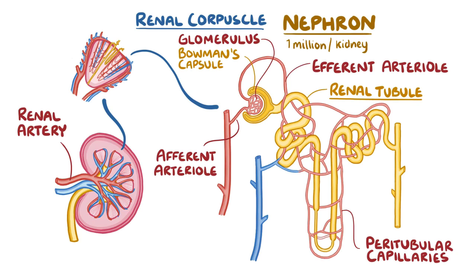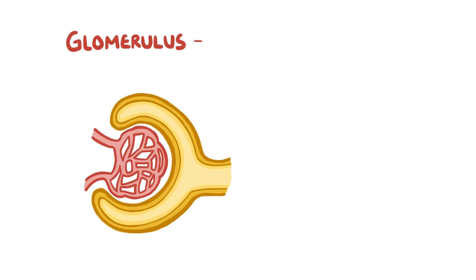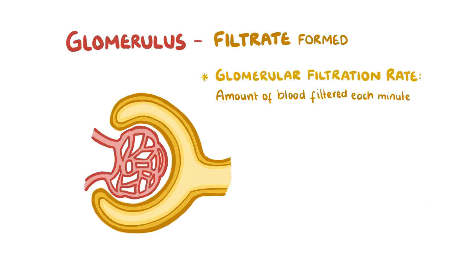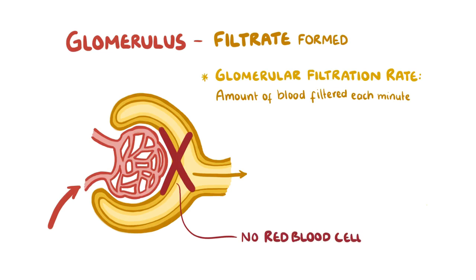Blood filtration starts in the glomerulus, where a urine precursor called filtrate is formed. The amount of blood filtered into the nephrons by all of the glomeruli each minute is called the glomerular filtration rate. It's actually just a small fraction of the blood that gets to the kidneys, because the glomerulus doesn't allow red blood cells and proteins to pass through and be excreted into urine.